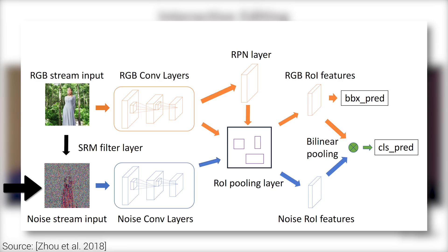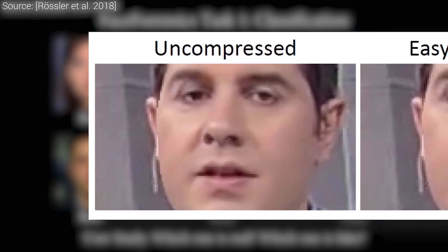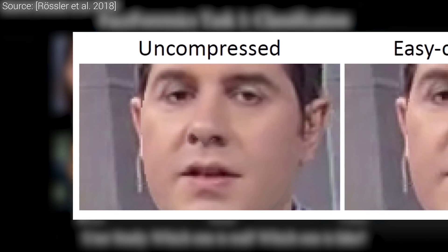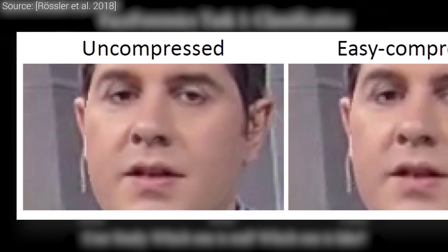Typically, if the image has been tampered with, either the noise or the color data is disturbed, or it may be that they look good individually, but the relation between the two has changed. The algorithm is able to detect these anomalies too.